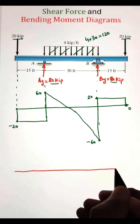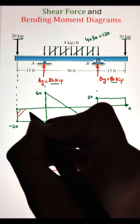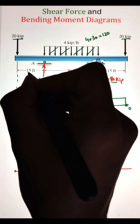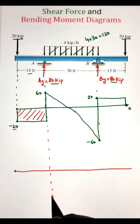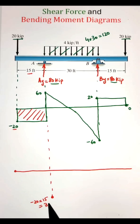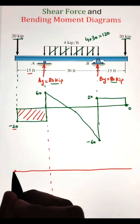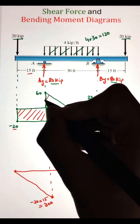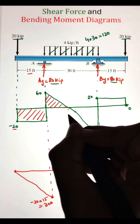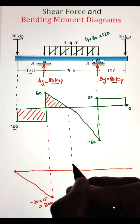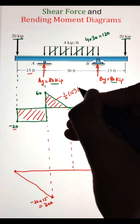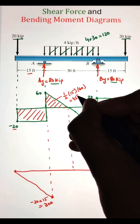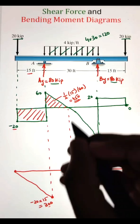Now, to draw the bending moment diagram, we can utilize the area under the shear force diagram. To begin, we have a rectangular area of negative 20 times 15, which equals negative 300 kip·ft. Since the slope is zero for that region in the shear force diagram, the moment diagram will be linear. Next, we have a triangular zone and we can calculate the area of the triangular zone by half base times altitude, which comes to 450. So our moment diagram will jump up — by adding 450 to negative 300, we get a value of 150.